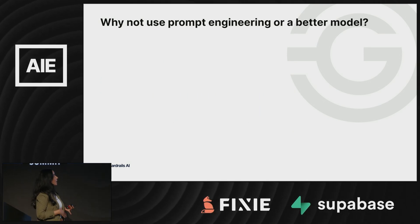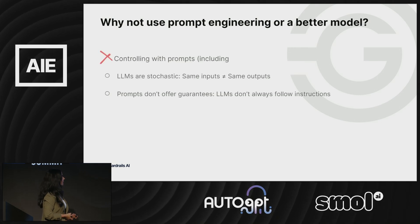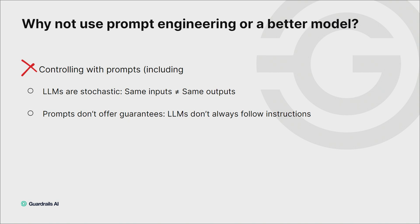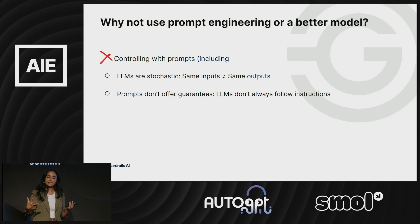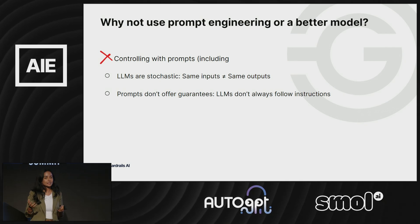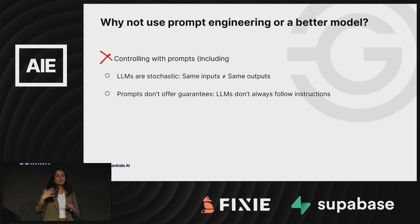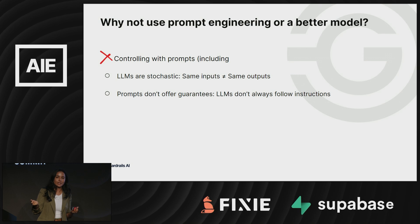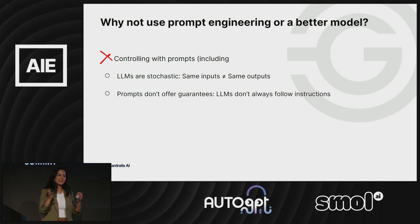A common question: why do I need this? Why can't I just use prompt engineering or a better fine-tuned model? Controlling outputs with prompts — including retrieval augmented generation, which injects specific context into your prompt — doesn't act as a guarantee. LLMs are stochastic. Even if you do all the prompt engineering in the world, there's nothing guaranteeing those instructions will be followed. We actually ran an experiment where we used LLMs as evaluators, ran the exact same experiment five different times changing zero parameters with zero temperature, and saw different numbers across our benchmark.